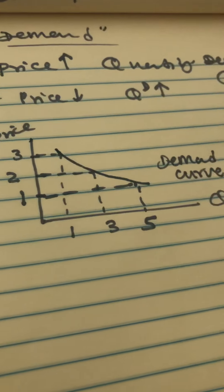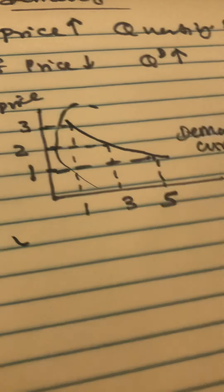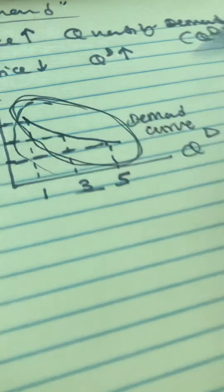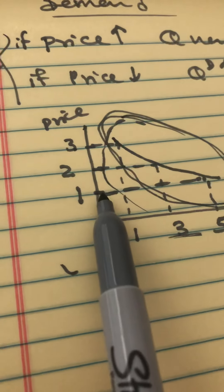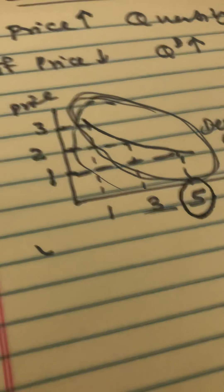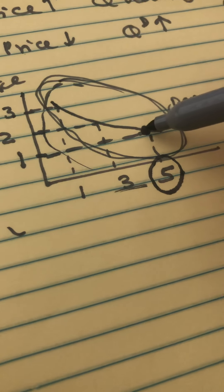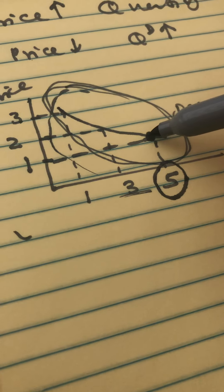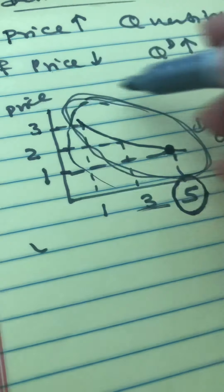Now let's talk about quantity demanded versus demand. As you can see, demand is this entire curve that we drew — we have different prices and different quantities. That's our demand. But quantity demanded is one single number. So if the price is $1, our quantity demanded is five. Quantity demanded is just one single point on the demand curve.